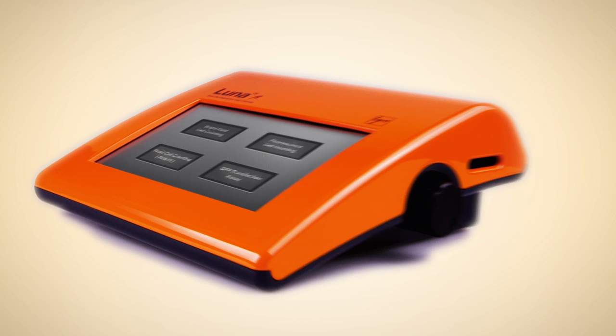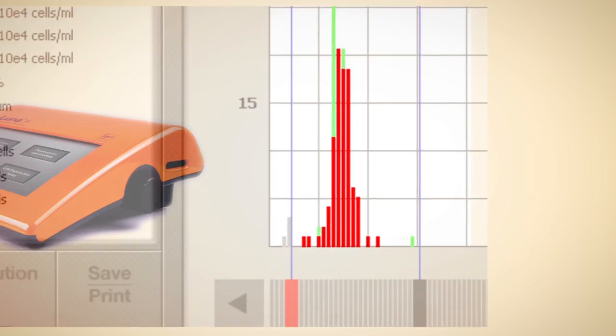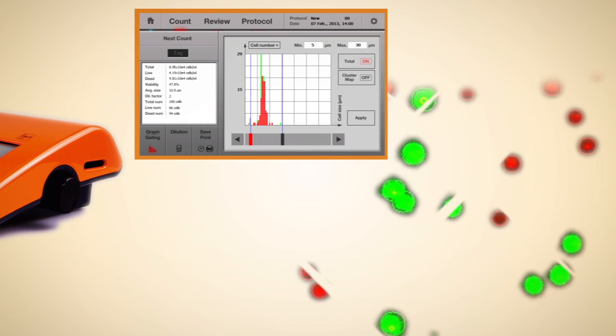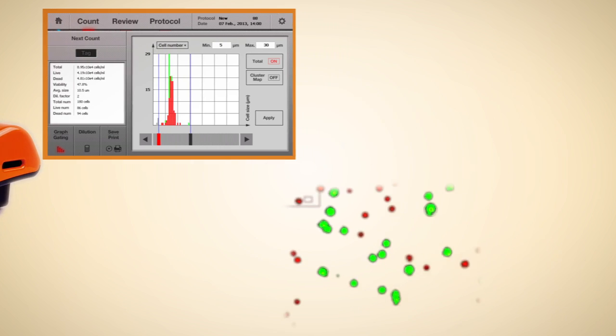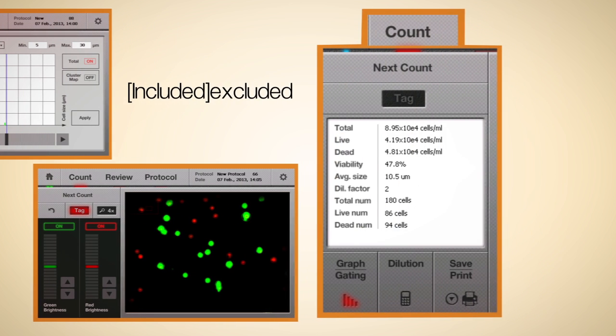Integrated analysis software gives immediate viability data. Counted cells can be gated based on cell size information. Particles can be easily excluded or included by simply defining the cell size in the count data.